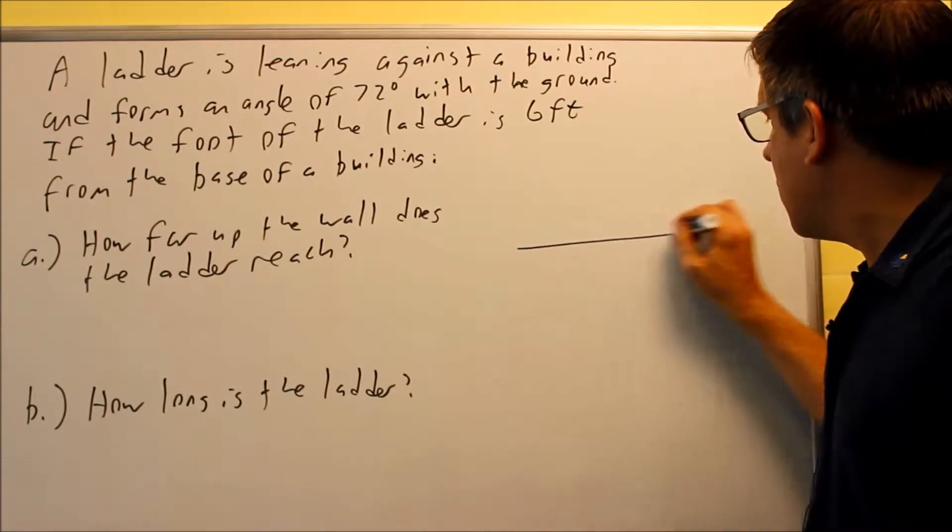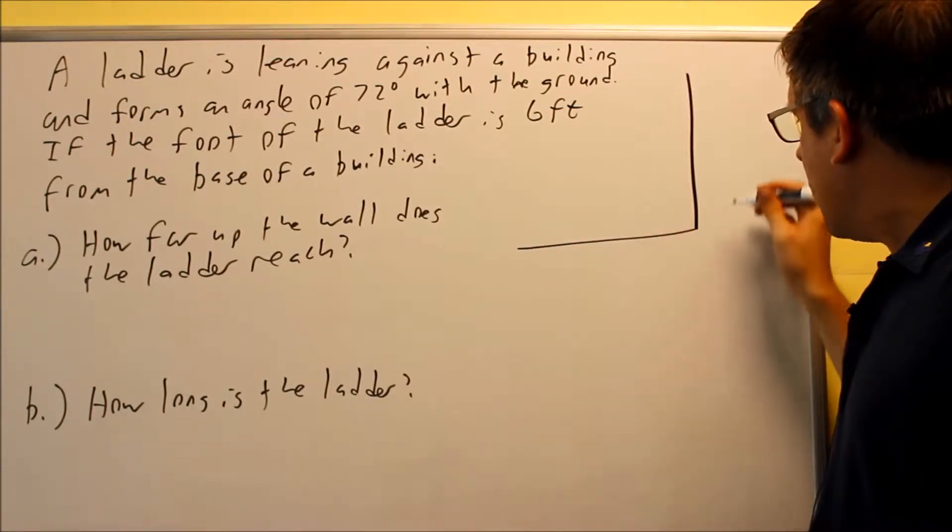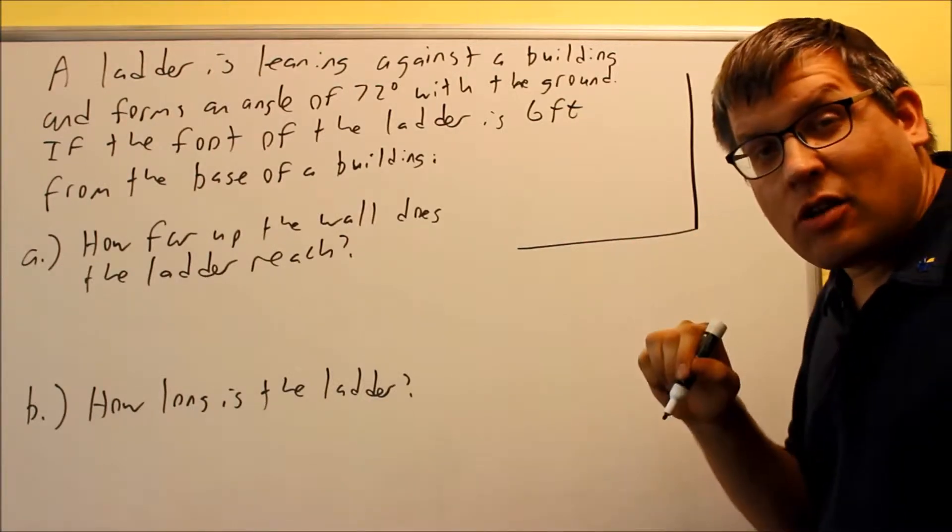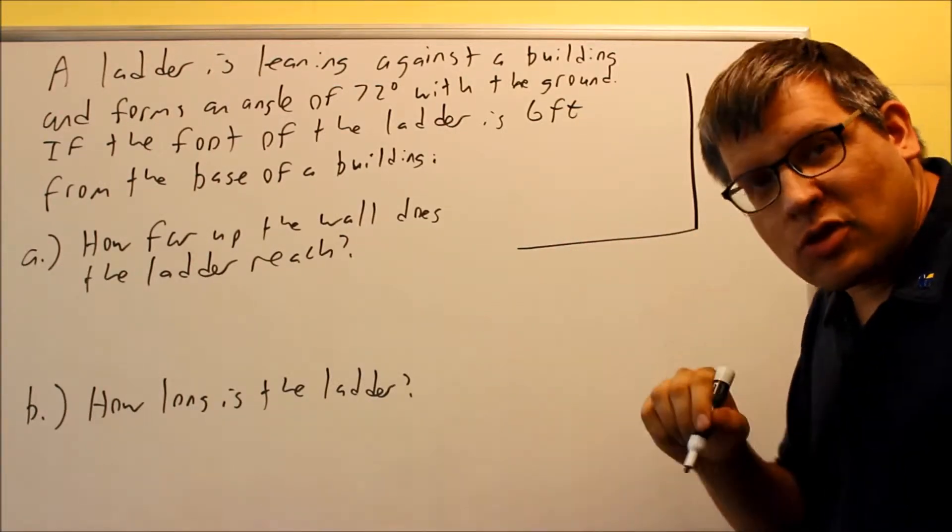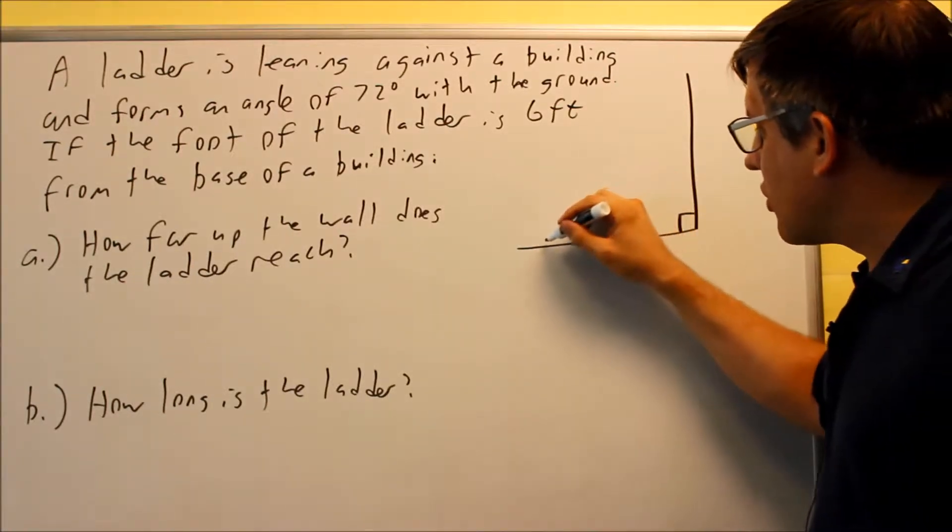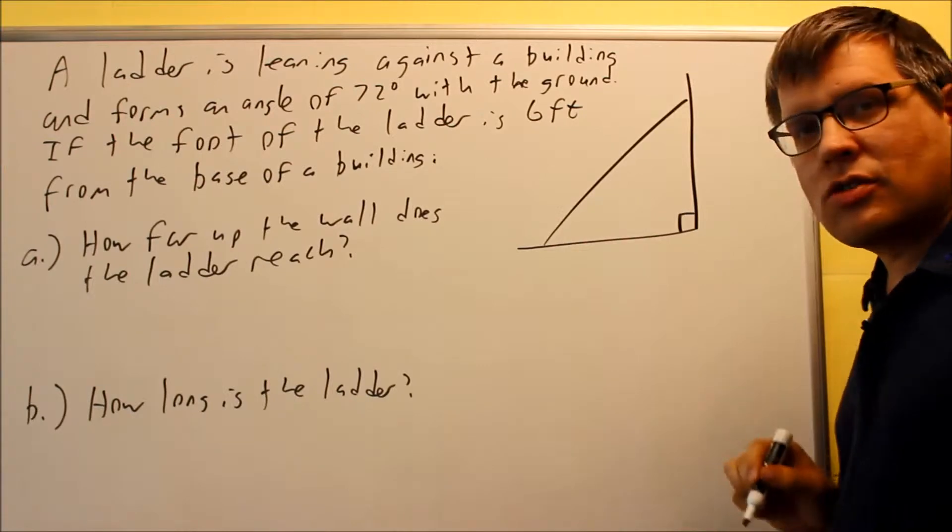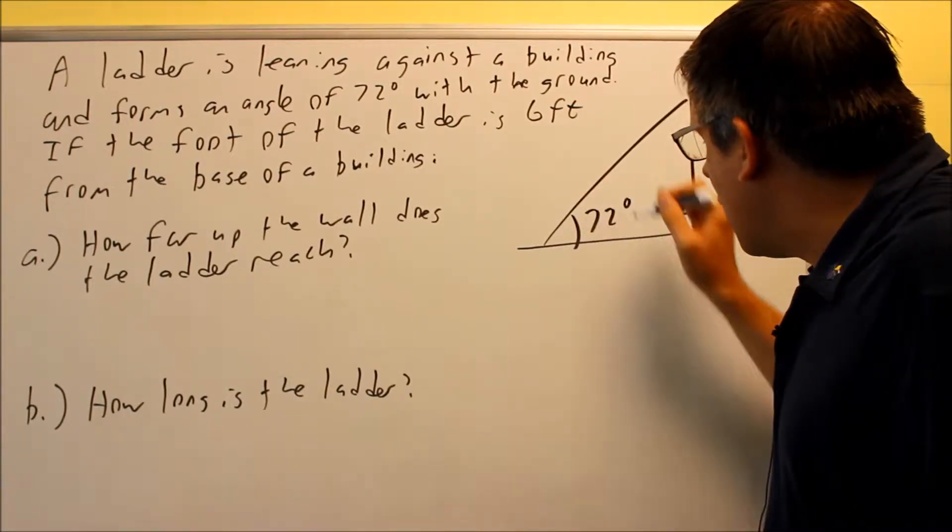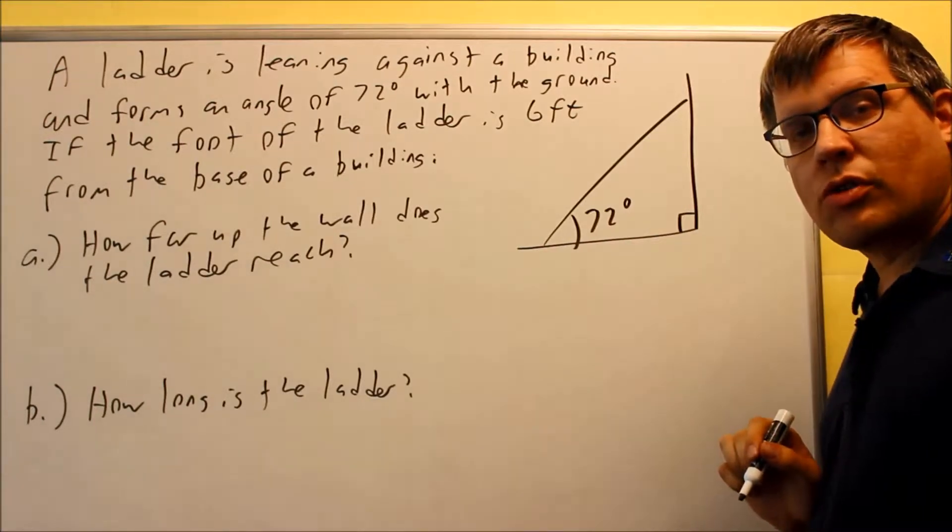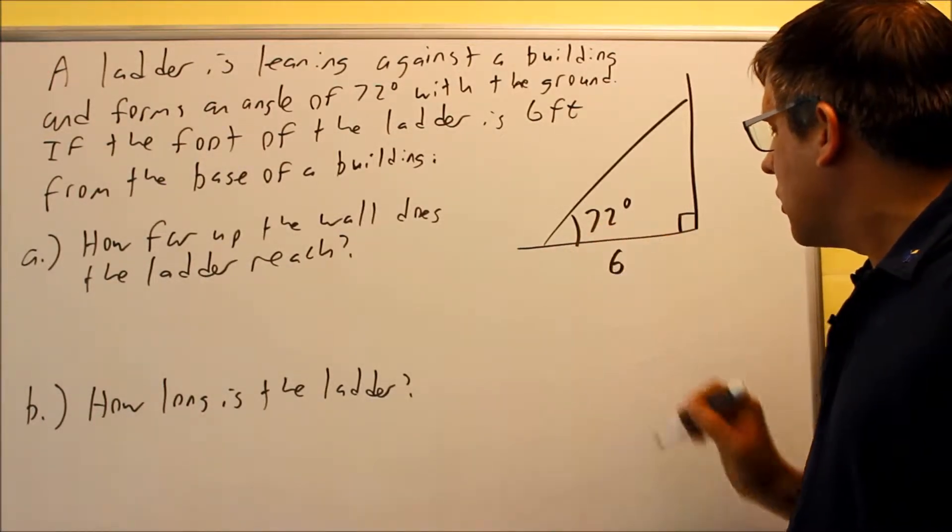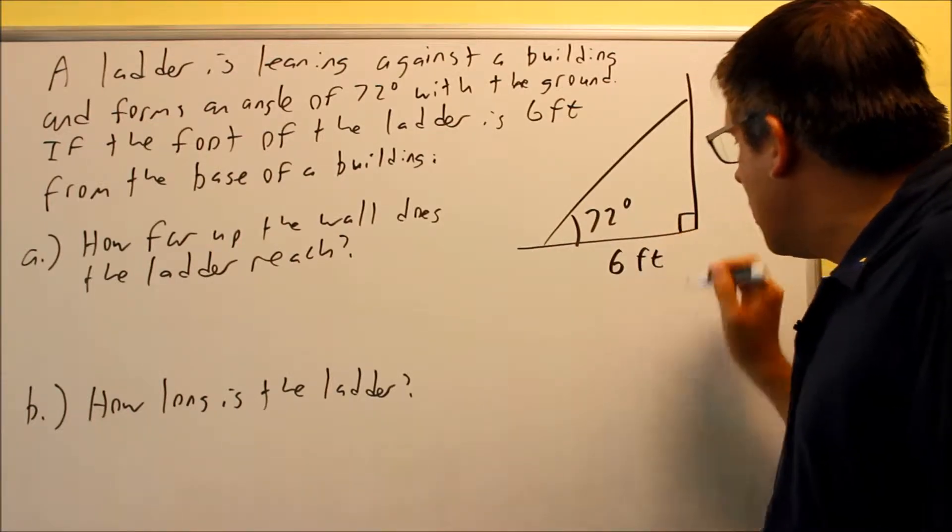So first, let's draw a building. We're going to assume that we have a building that makes 90 degrees with the ground. We're assuming we're not in San Francisco or anything like that. We're assuming that we do have a right angle there with the building and the ground. Here's a ladder that I have that's leaning against the side of the building. This makes an angle of 72 degrees with the ground. The base of the ladder is six feet away from the base of the building. So this is six feet here.